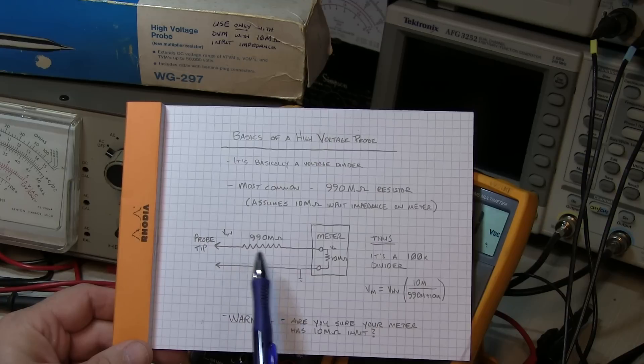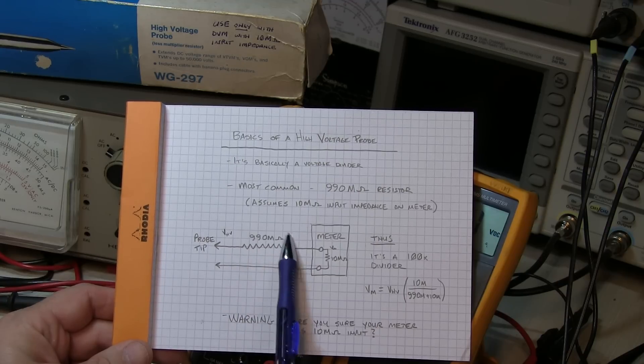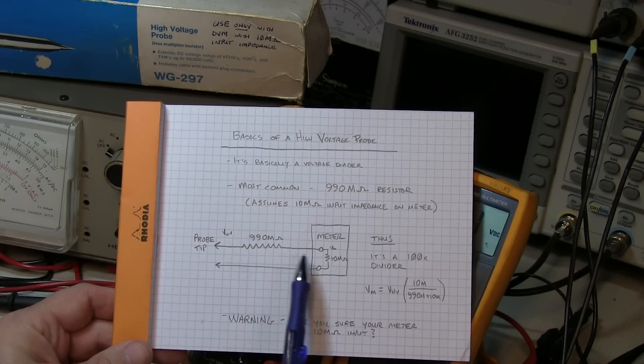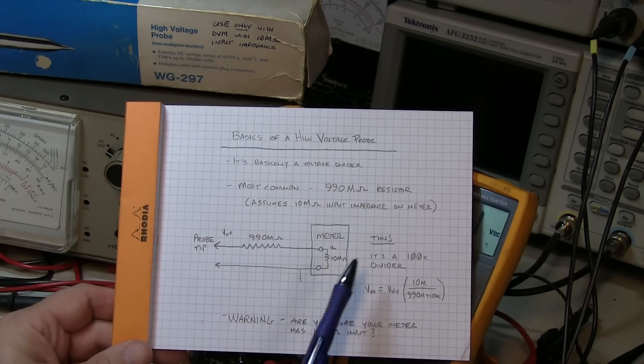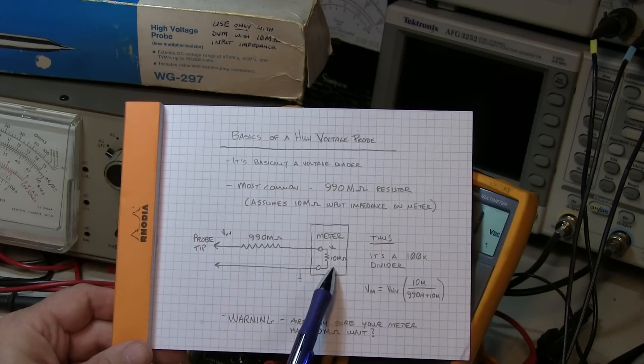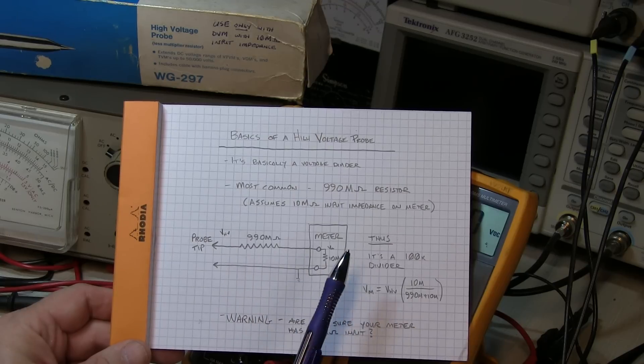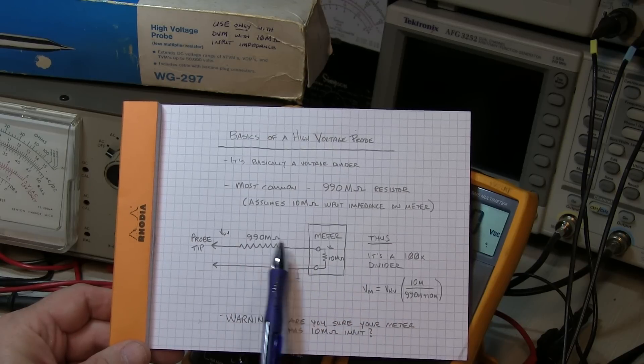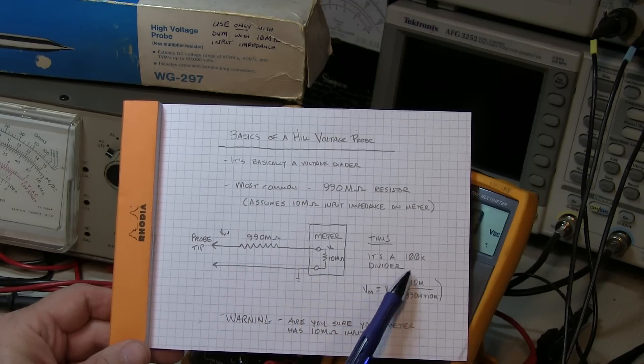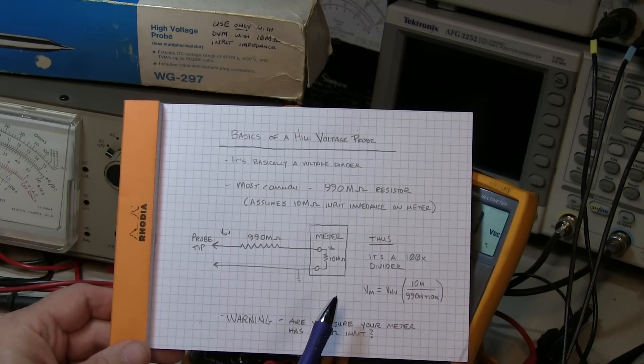Now the most common is that you'd have a 990 mega ohm resistor here, and the meter, most DMMs, have got a 10 mega ohm input impedance. I'm going to talk about that later, there's a little bit of a gotcha there, so don't go away. With these two resistors, it's really clear that this is a 100x voltage divider.